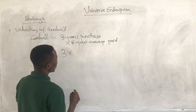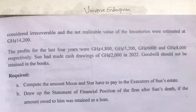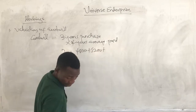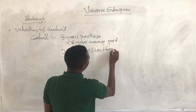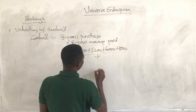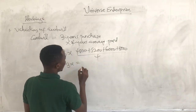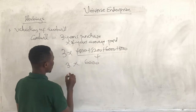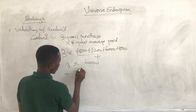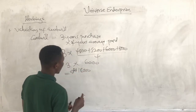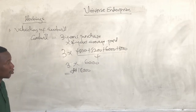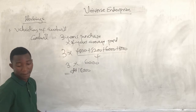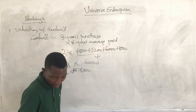So we are using the average profit method. That is 3 multiplied by the 4 years' average profit: ($4,800 + $5,200 + $6,000 + $8,000). That gives us the value of goodwill. The question also requires us to calculate interest on capital, so let's determine interest on Sun's capital. They said we should calculate 9% on his capital.